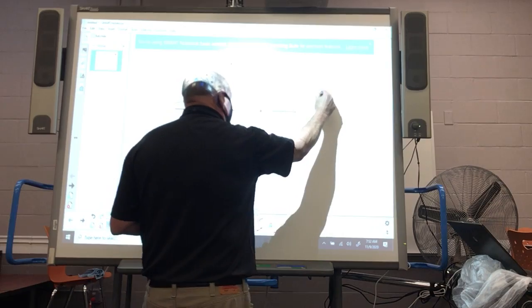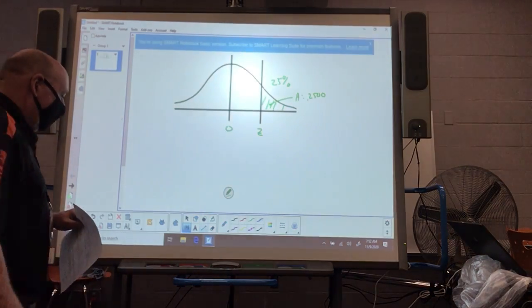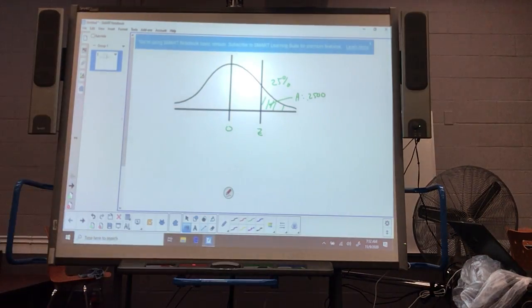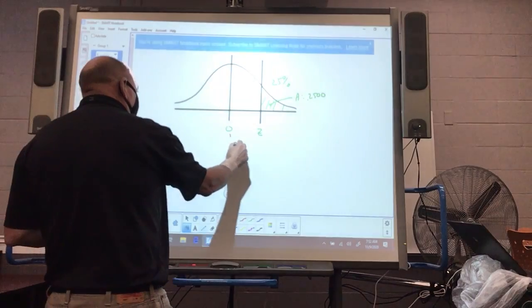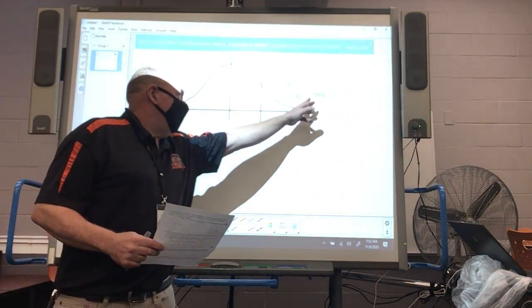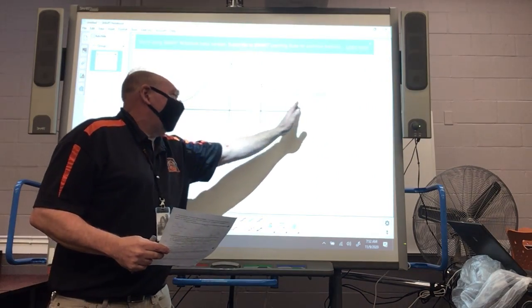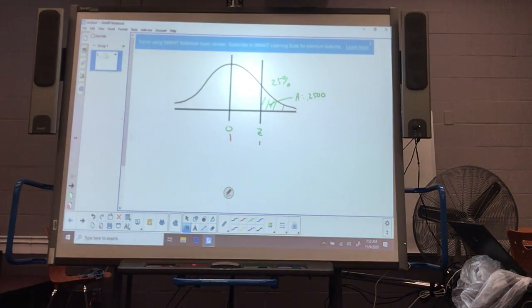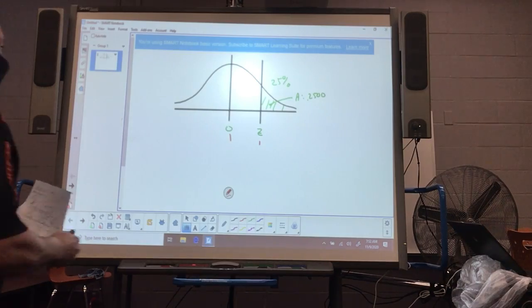Now your z-table gives you the area from zero to a z-score. I have here the area from the z-score to the right. So if I look at the area from zero to that z-score, what's the area from zero to that z-score have to be?